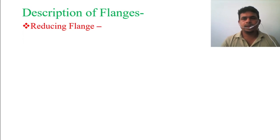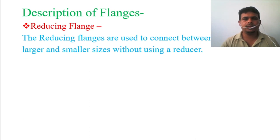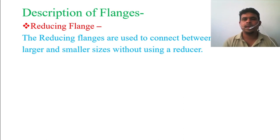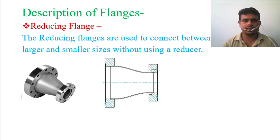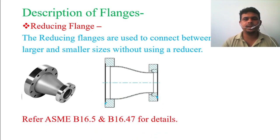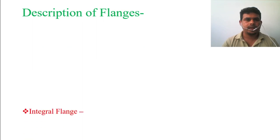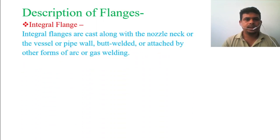The next type is the reducing flange. Reducing flanges are used to connect between larger and smaller pipe sizes without using a separate reducer. If you want to connect two pipelines where one side is larger and the other is smaller, normally you use a reducer, but with a reducing type flange you can do this in one combined component. The figure shows what a reducing flange looks like — it resembles a reducer but it is actually a reducing flange. Refer to ASME B16.5 and ASME B16.47 for details.